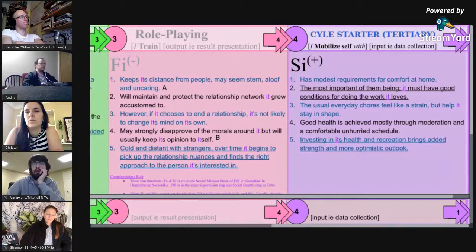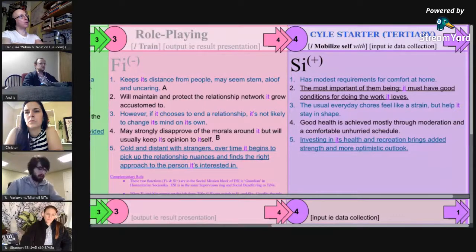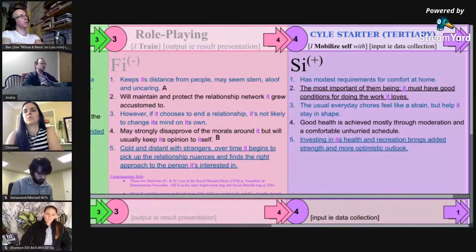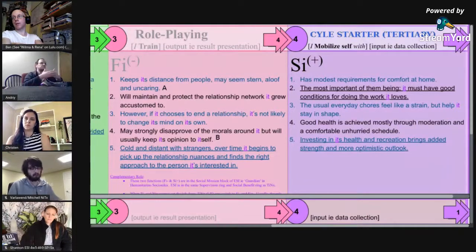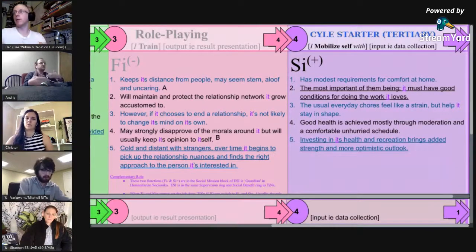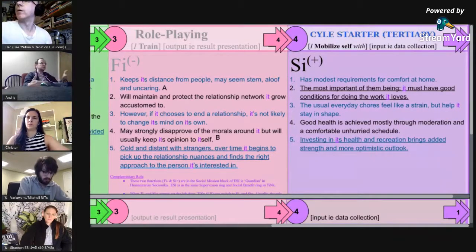If you're unable to create understanding or synthesize information into something useful for your own understanding, then you immediately put your guard up as Fi negative, which is immediately start working on the appropriate distance with the person you're dealing with.